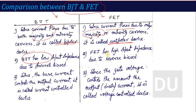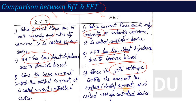In BJT, the input impedance is low, whereas in FET the input impedance is very high. In BJT, the base current controls the output current, which is why BJT is a current-controlled device. In FET, the gate voltage controls the output current, which is why FET is called a voltage-controlled device. Regarding noise: BJT has higher noise, whereas FET has lower noise. These are the key differences between BJT and FET.